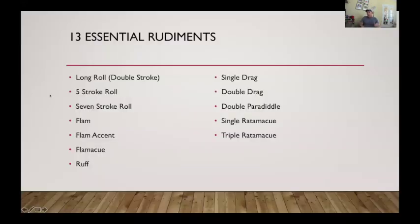Here are the 13 essential rudiments they agreed upon: the long roll, the double stroke roll, the five stroke roll, seven stroke roll, flams, flam accents, flammacue, roughs, single drags, double drags, double paradiddle, single ratamacue, and the triple ratamacue.